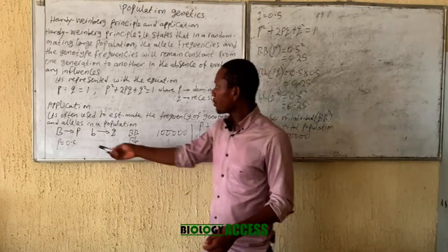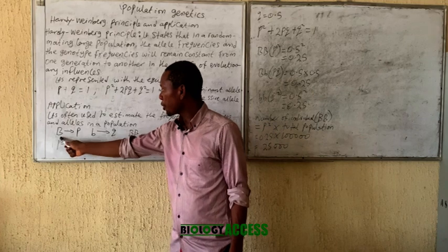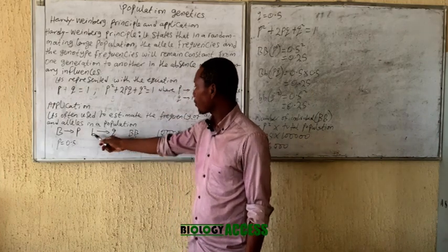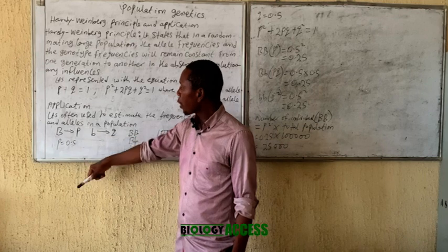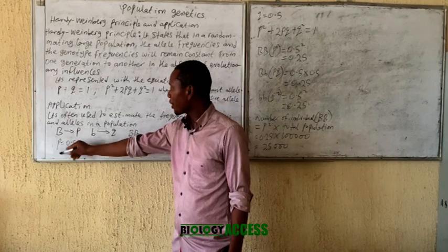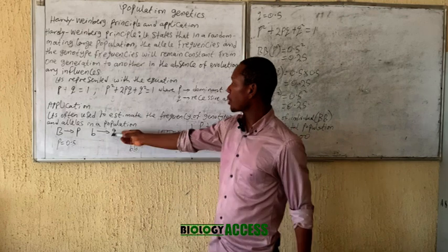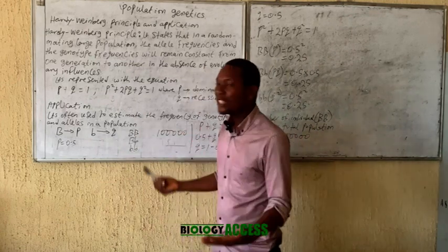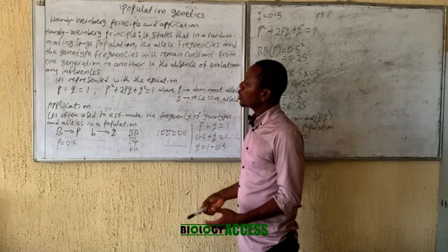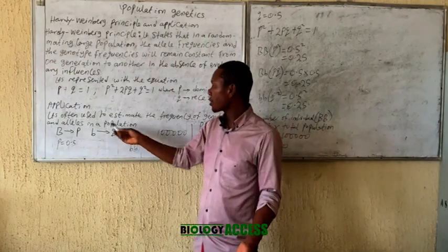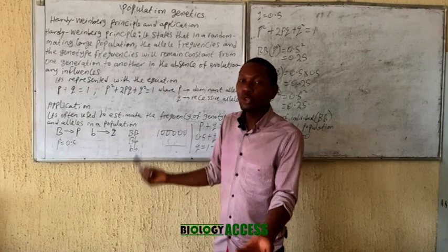Now, let's assume that the gene for fat, B, is dominant and the gene for slim is recessive. The frequency of the dominant allele, p, is 0.5. You are asked to calculate the recessive allele frequency in a population of a total of 10,000. You can also be asked to calculate the genotype frequency.